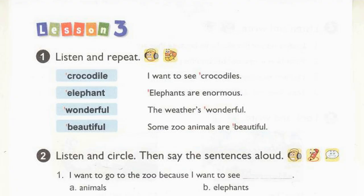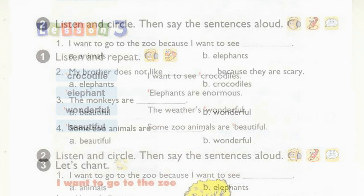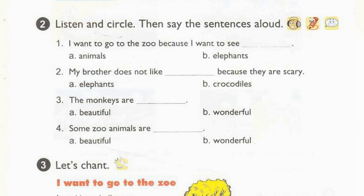Page 62. Lesson 3. Activity 1. Listen and repeat. Crocodile. I want to see crocodiles. Elephant. Elephants are enormous. Wonderful. The weather's wonderful. Beautiful. Some zoo animals are beautiful. Activity 2. Listen and circle. Then say the sentences aloud. 1. I want to go to the zoo because I want to see elephants. 2. My brother does not like crocodiles because they are scary. 3. The monkeys are beautiful. 4. Some zoo animals are wonderful.